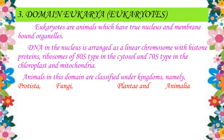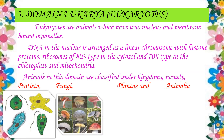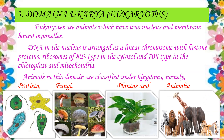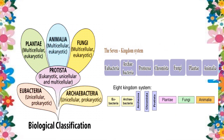Domain Eukarya includes all eukaryotes — organisms that have a true nucleus and membrane-bound organelles. DNA in the nucleus is arranged as a linear chromosome with histone proteins. The ribosomes in the cytoplasm are 80S type, while in the chloroplast and mitochondria they are 70S type. Animals in this domain are classified under the kingdoms Protista, Fungi, Plantae, and Animalia.